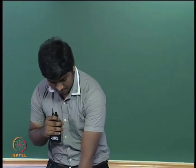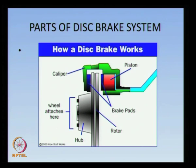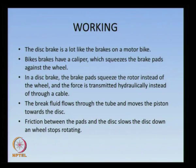These are the parts of a disc brake. The two green shafts are known as calipers, and the red piston is between the calipers, and the two blue-colored brake pads are on either side of the disc. The wheels are attached to the disc through the hub, and the disc is provided with a rotor.